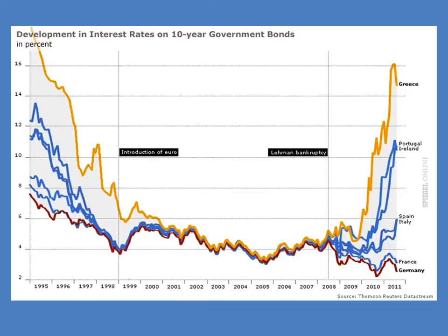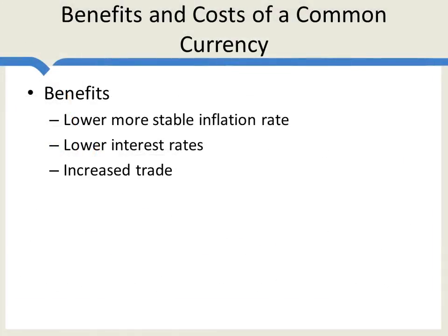Greece was able to borrow very cheaply. What we've seen with the Euro crisis is that these interest rates have once again diverged, as people are worried that Greece might exit the Euro and pay back its lenders in a new drachma instead of in Euros. Another benefit of using a common currency is increased trade with your currency partners. When you have two currencies, there are transaction costs in trading one currency for the other, it's harder to compare prices and costs, and over time you face greater foreign exchange risk. Adopting a common currency can increase trade among currency partners, which is particularly important for a small country such as Ecuador.